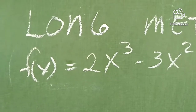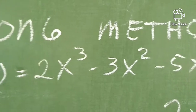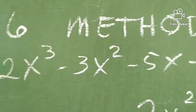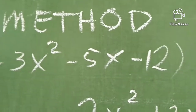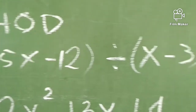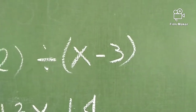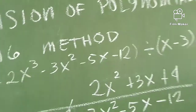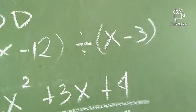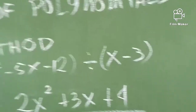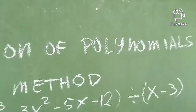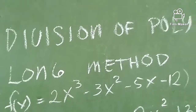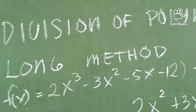Division pa rin po yun. Ulitin ko — ibig video ko ng mayos ha. Function of x is equals to 2x cubed minus 3x squared minus 5x minus 12 divided by x minus 3. So panoorin nyo po hanggang sa maintindihan nyo po ng mabuti. This division of polynomials long method. Thank you and God bless.